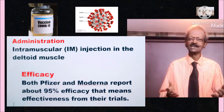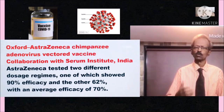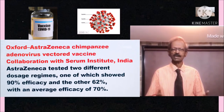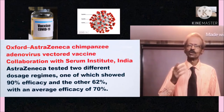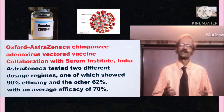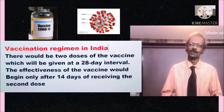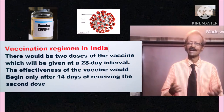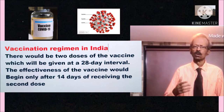The Oxford/AstraZeneca and Serum Institute vaccines contain an adenovirus vector component and were tested in two different dose regimens — one showing 90% efficacy and the other showing 62% efficacy. For the COVID-19 vaccination regime in India, there will be two doses of the vaccine given at a 28-day interval, and the effectiveness will begin only after 14 days of receiving the second dose.